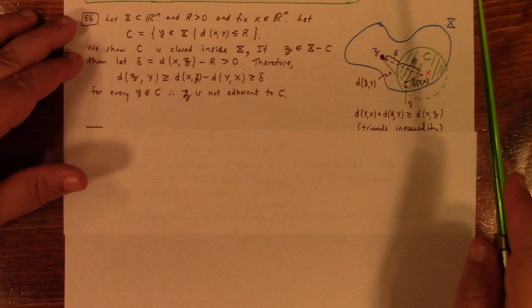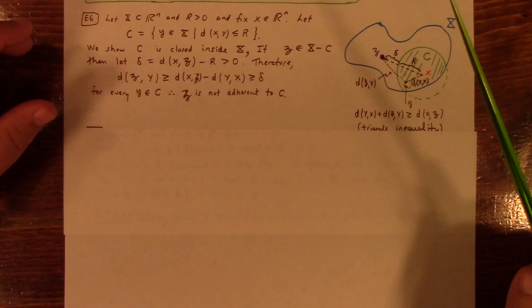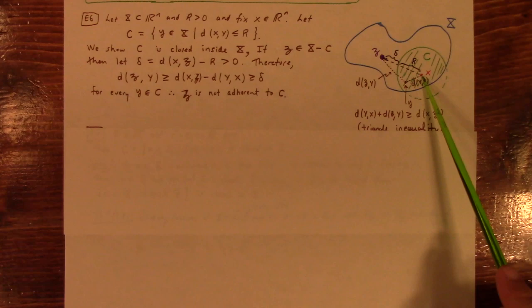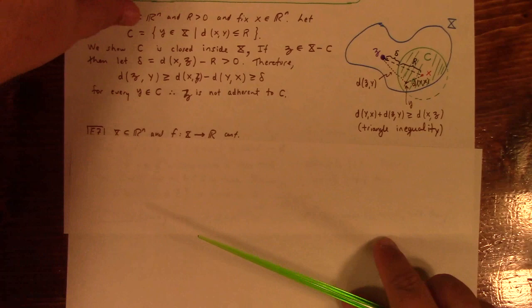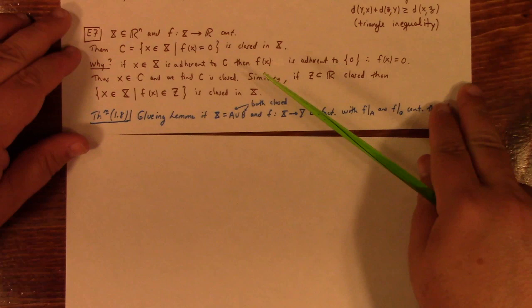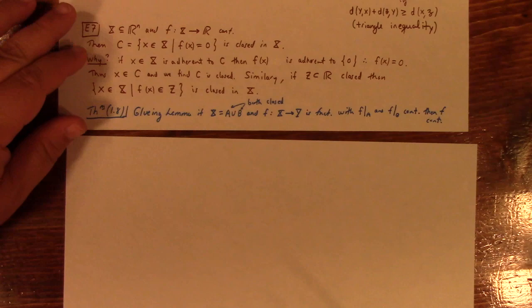So, to reiterate, what example six shows is that a closed ball intersected with a set is closed with respect to that set. I think later we'll recognize that this is still true if we look at something called the relative topology, but anyway, getting too far ahead of myself here.